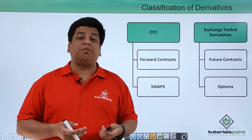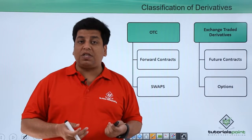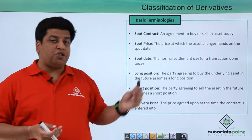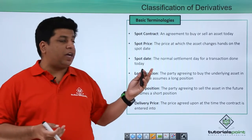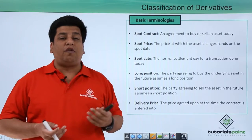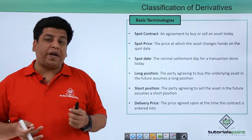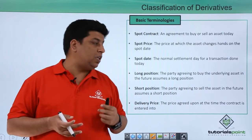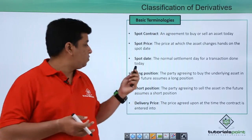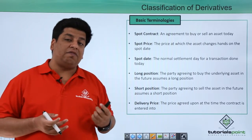Now let's understand some important terminologies used in derivatives. First is the spot contract — the contract or agreement entered by the buyer and seller for an asset today. Spot price is the price of the asset that changes hands on the spot date, which is the settlement date where the buyer and seller exchange the assets.